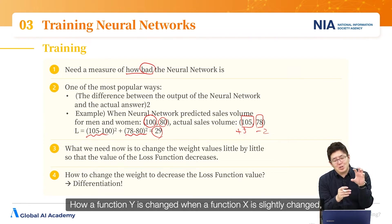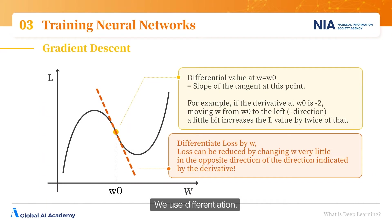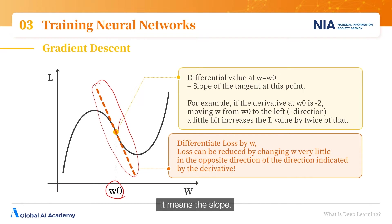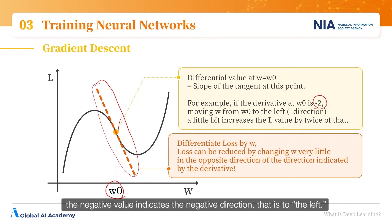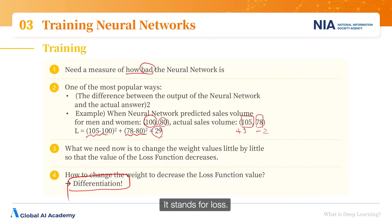Differentiation calculates how a function y changes when a function x is slightly adjusted. We use differentiation — let's revisit a math class concept. Differentiating w0 means finding the slope of the tangent, marked here in orange. It means the slope. If the slope of the tangent is minus 2, the negative value indicates the negative direction — that is, to the left. Here w0 was 1 and it moves to the left towards 0.9 and 0.8. The L on the y-axis means the difference we calculated before — it stands for loss.